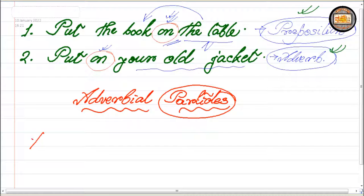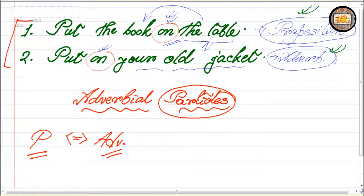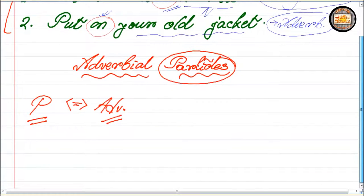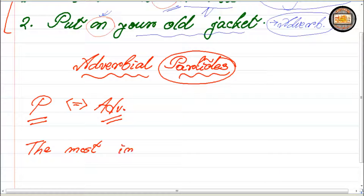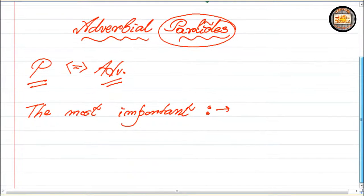That special characteristic is that they are prepositions as well as adverbs. Sometimes they are used as prepositions and sometimes they are used as adverbs. Now you have to decide in which condition they are prepositions and in which they are adverbs. So we have learned that with these two examples. Let's proceed further and find out what are the words or expressions we consider as adverbial particles — the most important of those words. You may write them down as they would help you a lot in your further learning.